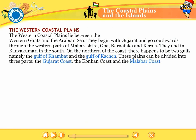The western coastal plains lie between the Western Ghats and the Arabian Sea. They begin with Gujarat and go southwards through the western parts of Maharashtra, Goa, Karnataka and Kerala. They end in Kanyakumari in the south. On the northern part of the coast there are two gulfs, namely the Gulf of Khambhat and the Gulf of Kutch. These plains can be divided into three parts: the Gujarat coast, the Konkan coast and the Malabar coast.